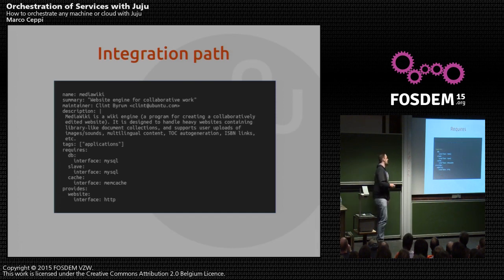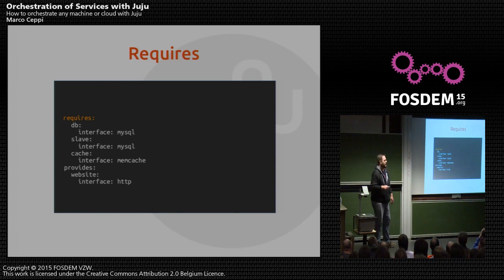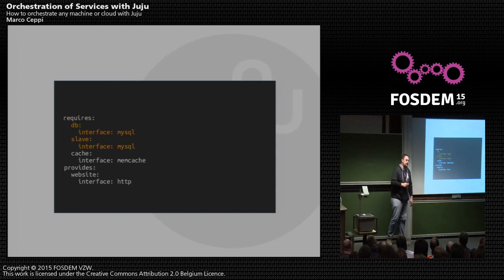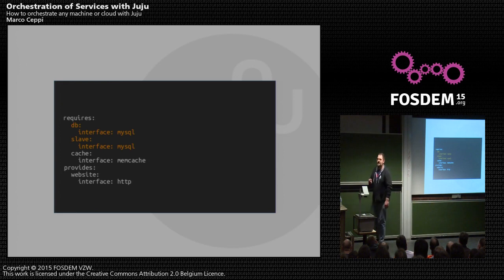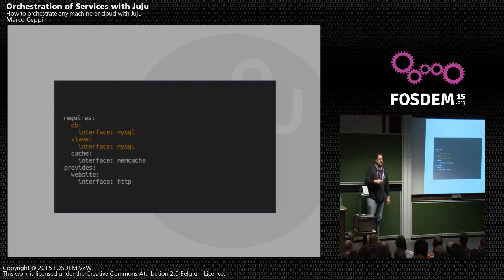The big important part is right here where it says 'requires.' This is where we're dictating to Juju what's going to talk to our service — the things I understand: DB, slave, and cache. There are two components to this: not only do you have the relationship name, you also have what's called an interface. Interfaces are where the magic happens — this is where data is going to be exchanged across the wire. You can have any number of relationships that share, but as long as they have their own unique interface, that's where you can start stacking different services together using the same relationship, which enables these interchangeable components.